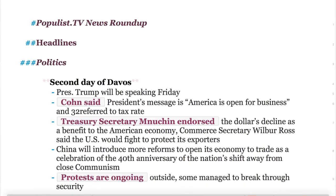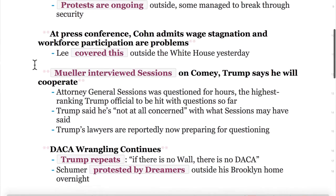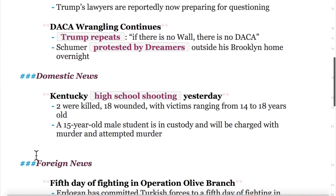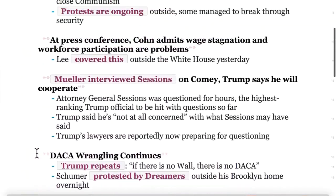But there might be other things you can use that use what's called markdown. What is markdown? Markdown is a way of defining the text in a document using simple tags. The best way to show you is to show you. Here's a Ulysses document — when you look at it, it is not attractive. But I want to call your attention to this single hashtag where it says populist.tv news roundup, then two hashtags for headlines, three hashtags for politics, three hashtags for domestic news, foreign news. These are markdown.